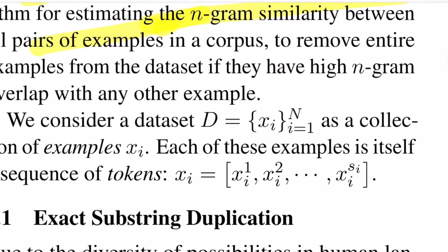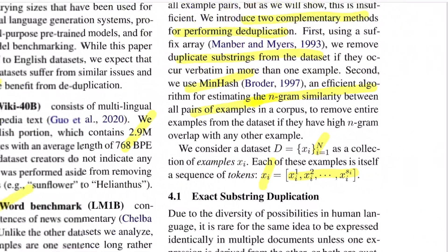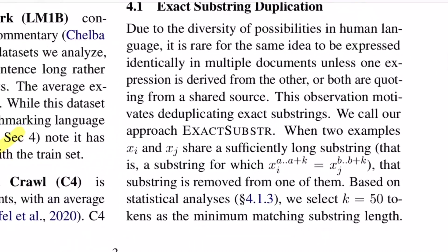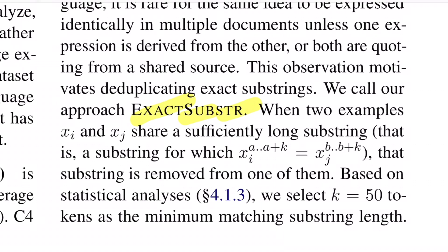Formally, you define your dataset as n examples, where each example is a sentence represented as a sequence of words. A simple technique for deduplication would be to perform an exact string match between all example pairs. But since humans don't always rewrite exact strings, they introduce exact substring deduplication: if two examples xi and xj share a long common substring, you delete that common string. They set the parameter 2k equal to 50, so at least a 50-word-length substring must match before it is removed.